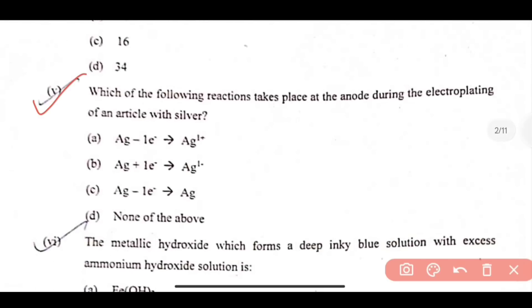Now here, next question is question number 5, which of the following reaction takes place at the anode during the electroplating of an article with silver? So this is the question we have discussed yesterday in MCQs, electrolysis question here. So here your correct option is option number A, that is AG minus 1 electron minus, so AG 1 plus. So option number A will be correct.